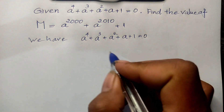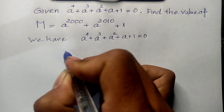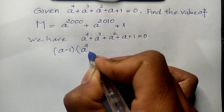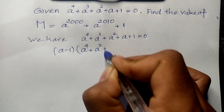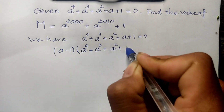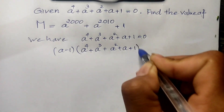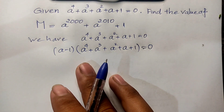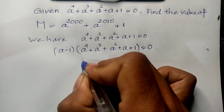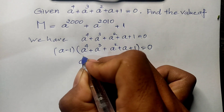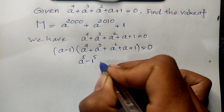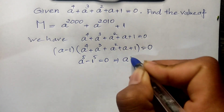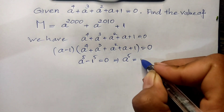So if I multiply both sides of this equation by (a - 1), I get (a - 1)(a⁴ + a³ + a² + a + 1) = 0, which gives us a⁵ - 1 = 0, and therefore a⁵ = 1.